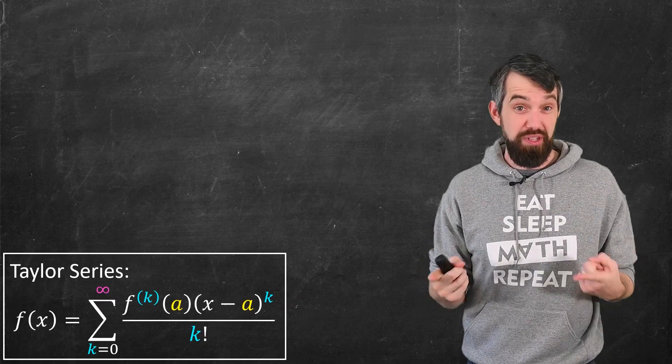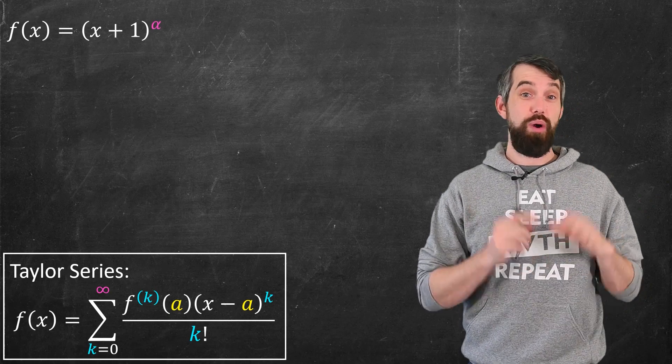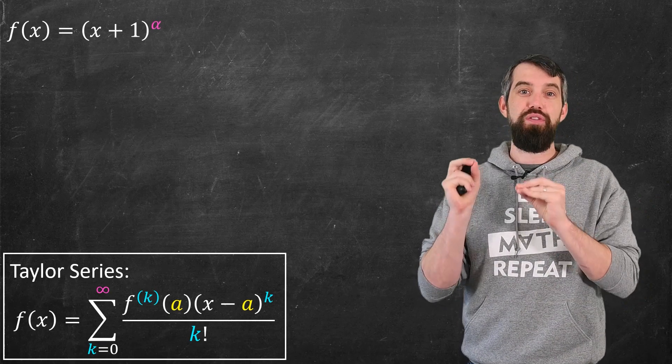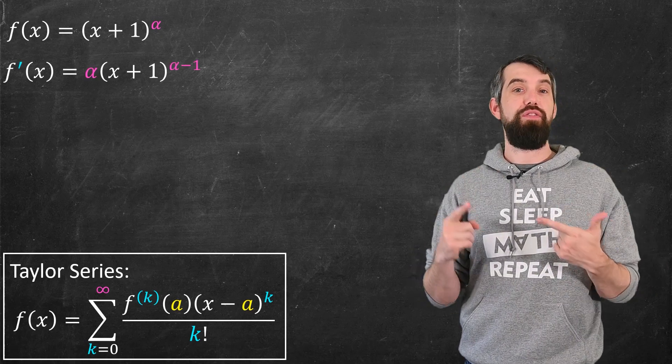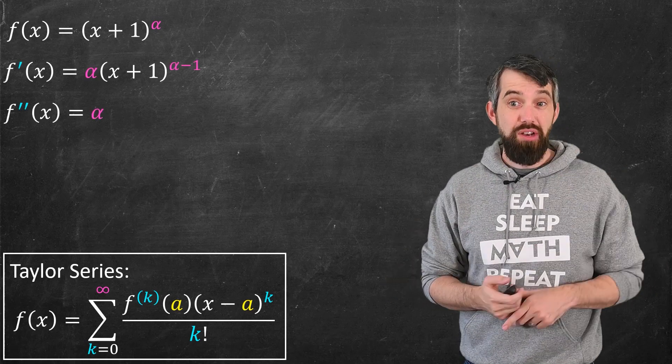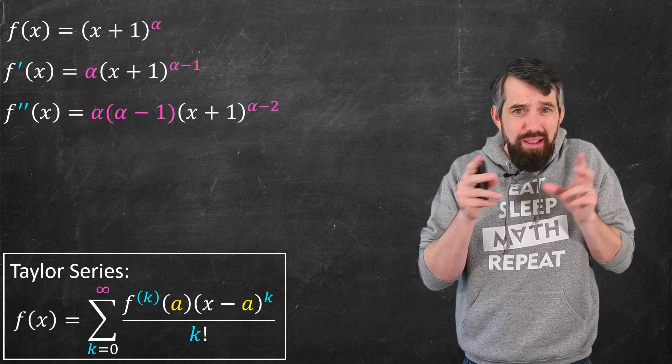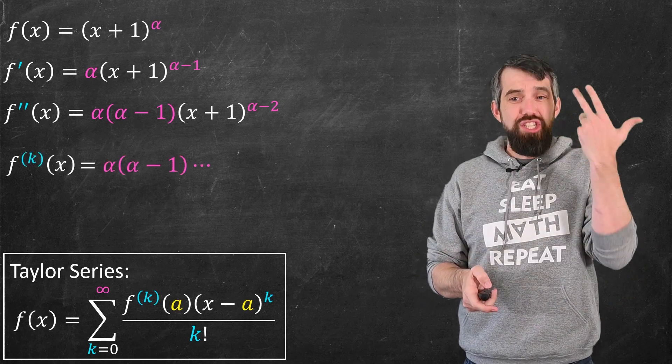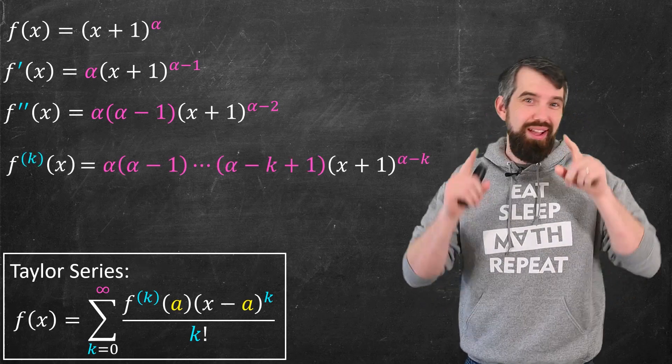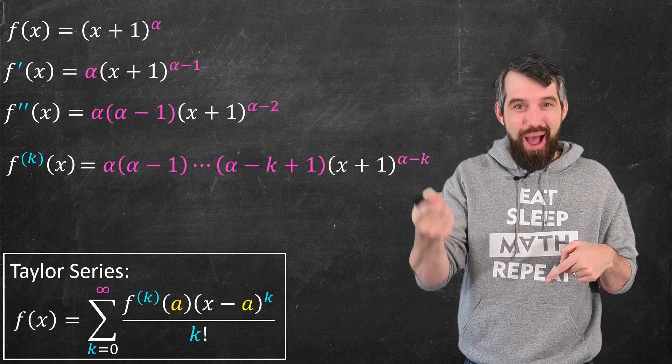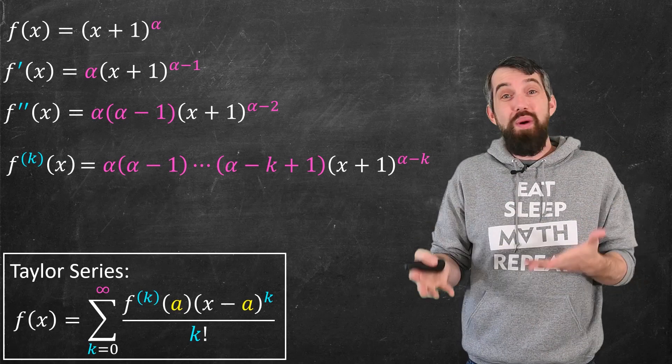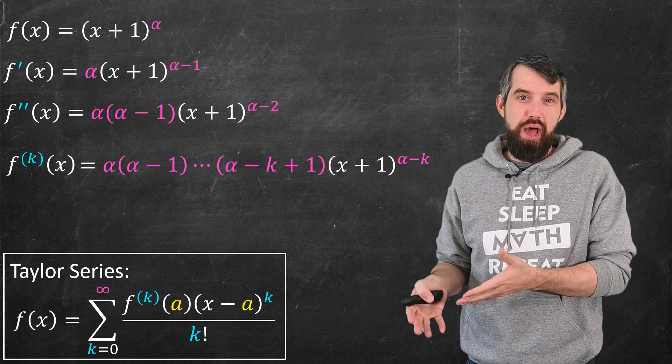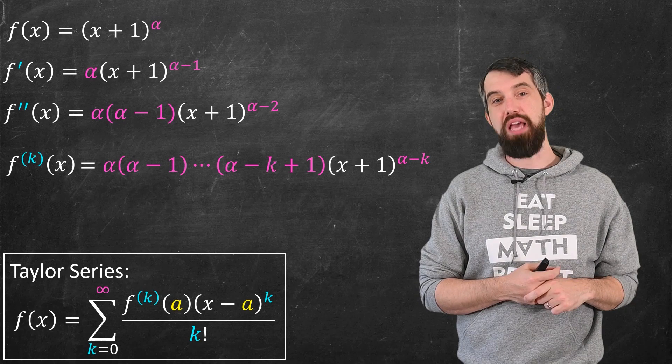Okay, so let's actually compute the Taylor series in our specific example, where we've got our function, and it's x plus 1 to the alpha, alpha a real number. First derivative, the alpha comes out the front, and it now becomes alpha minus 1. Second derivative, it's now alpha times alpha minus 1 out the front, and generally in the kth derivative, put brackets in here with the k to say this is not the kth power, this is the kth derivative. Either way, it's alpha, alpha minus 1, all the way down to alpha minus k plus 1, times the x plus 1 to the alpha minus k.